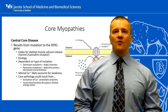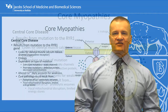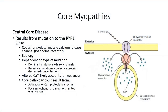The principal form of core myopathy is termed central core disease. This results from a mutation to the RYR1 gene found on chromosome 19, which codes for the skeletal muscle calcium release channel located in the sarcoplasmic reticulum. These are the channels which respond to focal electrochemical changes in the T-tubule system to trigger the release of calcium to flood the myofibril and initiate muscle contraction.